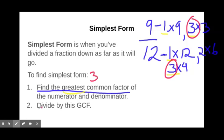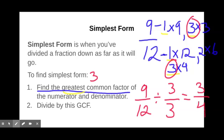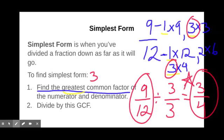Step 2 is to divide my fraction by that greatest common factor. So let's take 9 twelfths and divide both my numerator and my denominator. Remember, doing the same thing to top and bottom. 9 twelfths is equivalent to 3 fourths. 3 fourths would be my simplest form.